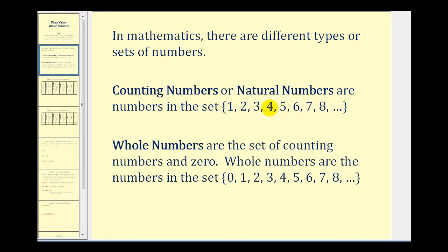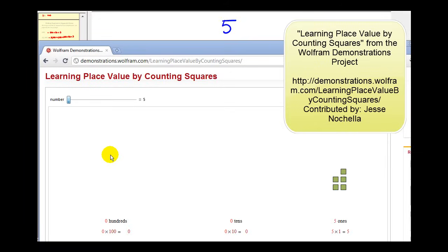Since our number system is base ten, as we consider larger and larger whole numbers, we have to introduce place value to distinguish between different quantities. For example, if we were counting these items where each square was one, we'd have a total of five — or five in the ones place value — which gives us the number five.